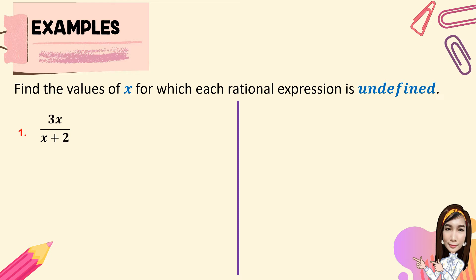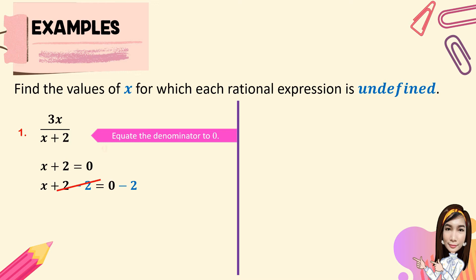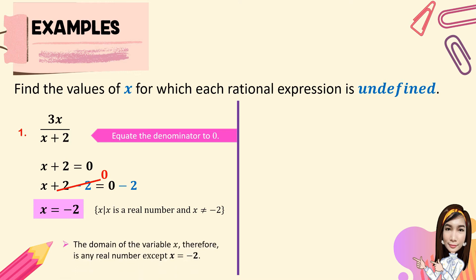Find the values of x for which each rational expression is undefined. For number 1, we have 3x all over x plus 2. We equate the denominator to 0: x plus 2 equals 0. Using the addition property of equality, we add negative 2 to both sides, giving x equals negative 2. So the domain of x is any real number except x equals negative 2.